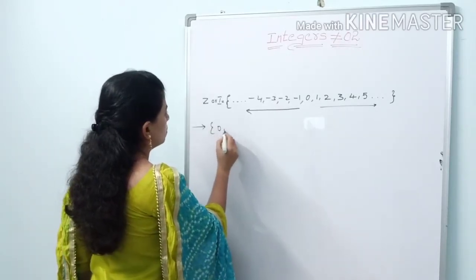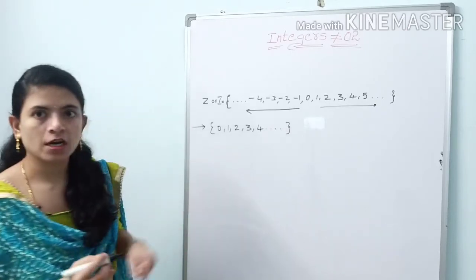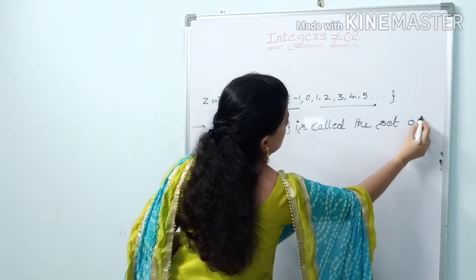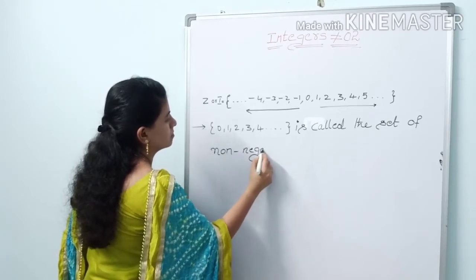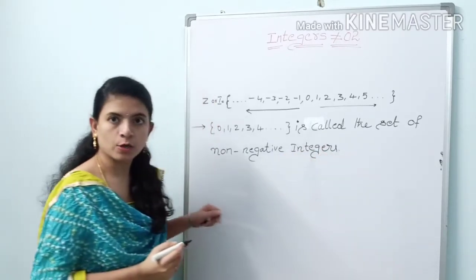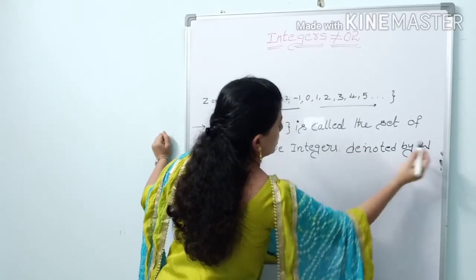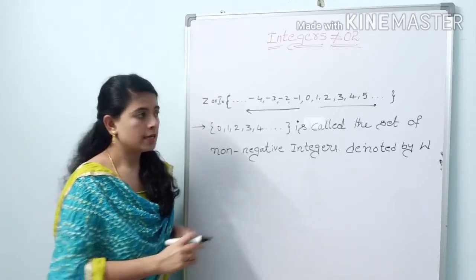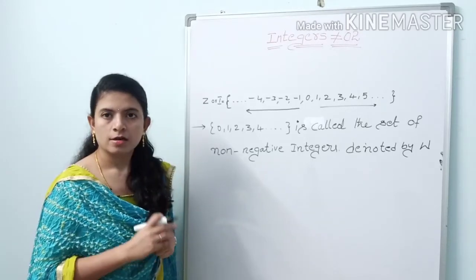The set {0, 1, 2, 3, 4, ...} is called the set of non-negative integers. It is denoted by capital W. Capital W means the whole number set.